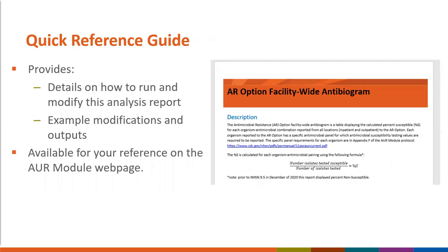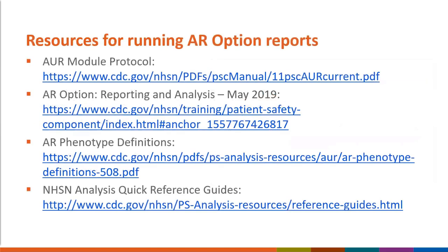That's a lot of information on the antibiogram report, so I want to point you to another resource — our quick reference guides — which provide similar details on how to run and modify this report, complete with example modifications and outputs along with interpretations. The QRGs can be accessed on our AUR module homepage. Additional AR option resources that may be helpful as you analyze your AR option data include our protocol, some previous training videos, and additional quick reference guides.